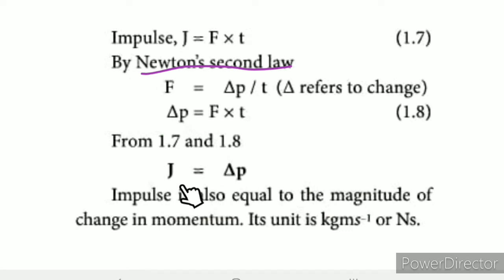Impulse is also equal to the magnitude of change in momentum. Its unit is kilogram meter per second or Newton second (Ns). Momentum p equals m times v, where m is kilogram and velocity is distance by time in meters per second.